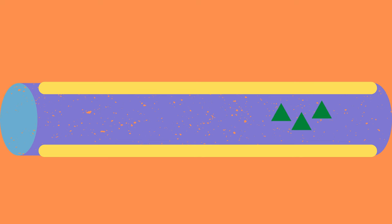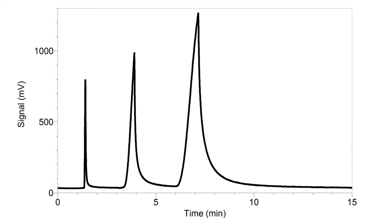After the different components of the samples have been separated they exit the column one after another. They are then detected and the results are displayed in a gas chromatogram.